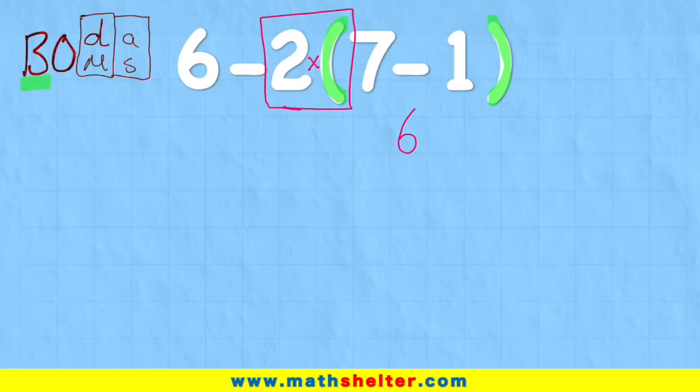So if I was to expand this out, what it would actually have looked like at the start would be six subtract two times the bracket of seven minus one. So we do have this times. So therefore, multiplication comes before subtraction.